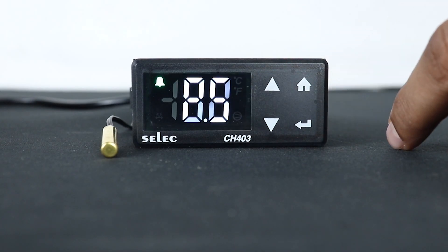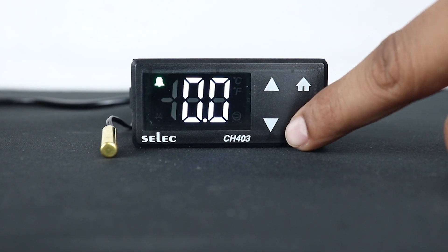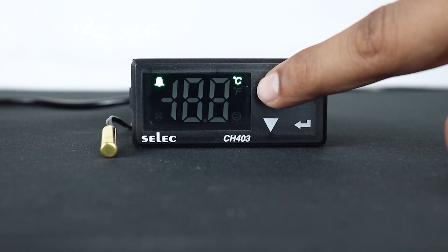Next parameter is P5 or display offset. It is used to calibrate the display readings according to another recorder or indicator.